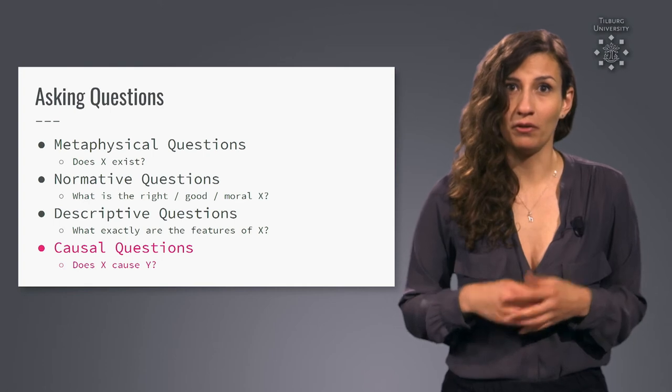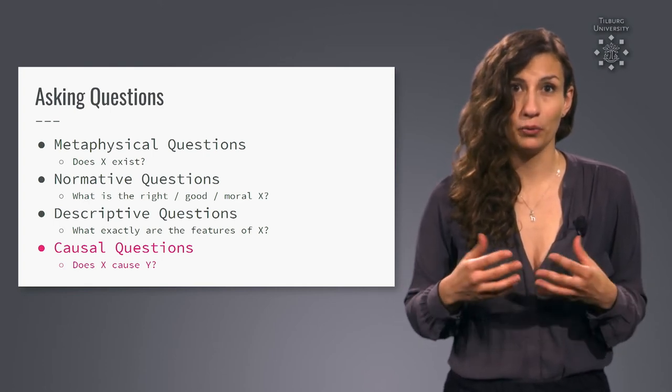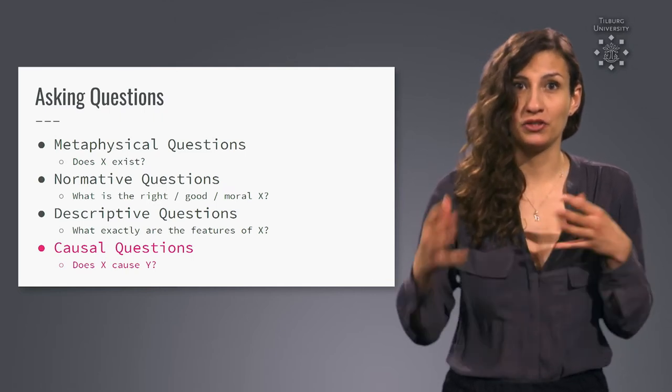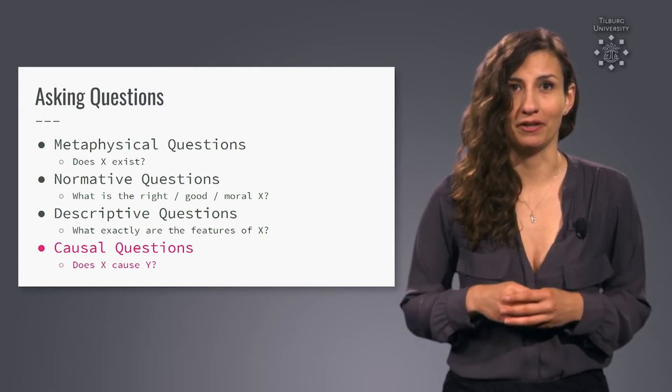Natural scientists are often interested in causal types of questions. They often want to predict what happens when we do something and come up with technologies, strategies and mechanisms to control the world that we live in.